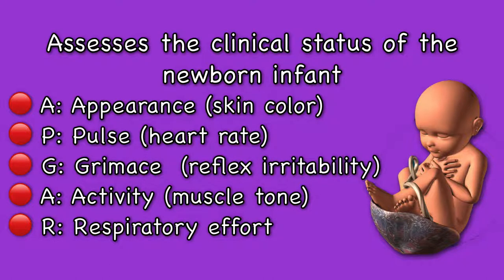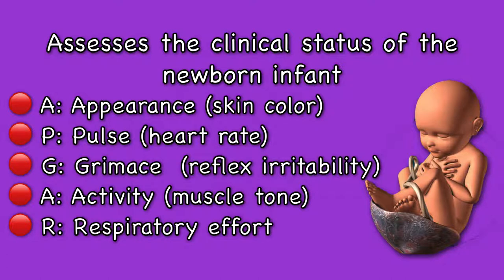A stands for appearance, which is the skin color. P for pulse, that is the heart rate of the newborn. G for grimace, which is the reflex irritability. The second A stands for activity, that is the muscle tone. And R refers to the respiratory effort of the newborn.